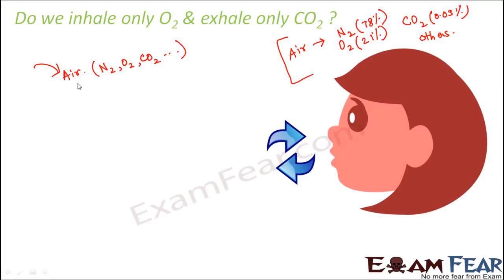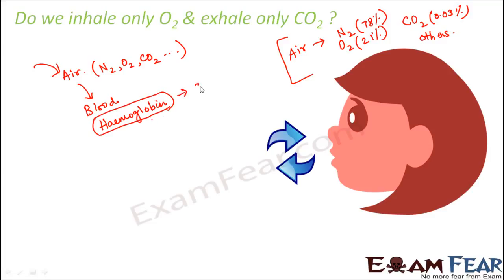Whatever we breathe in is air, which contains many gases like nitrogen, oxygen, carbon dioxide, etc. When this air enters our body, it is transported to different cells through blood. This blood contains a special protein called hemoglobin, and it has a very strong affinity for oxygen — a strong attraction for oxygen. So hemoglobin binds with oxygen and that is how it carries oxygen to different cells of the body, taking oxygen out from the other gases present in the air.